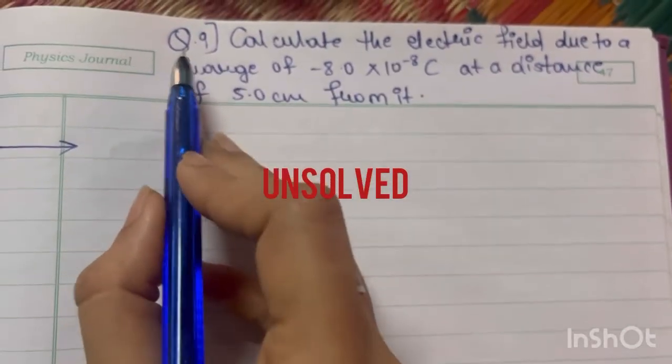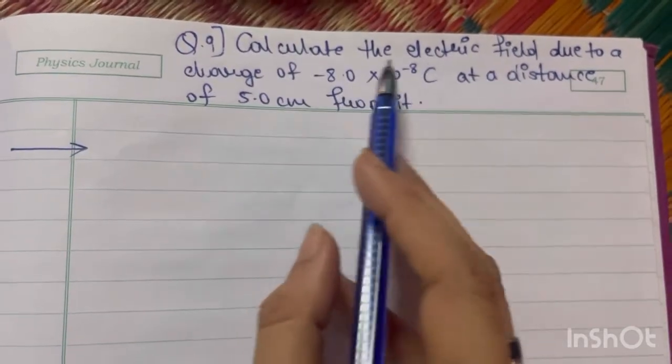Starting with numerical number 9, an unsolved numerical of electrostatics: calculate the electric field.